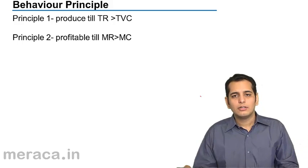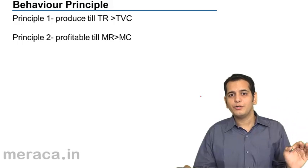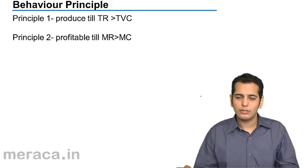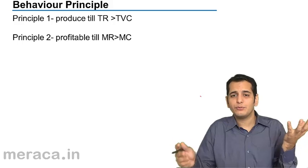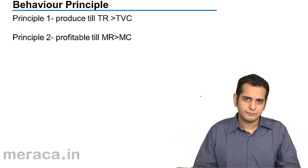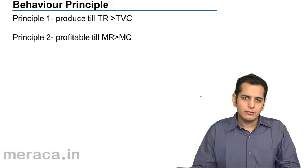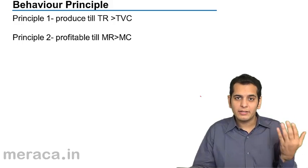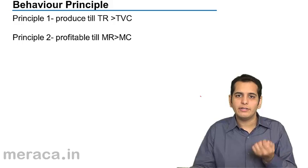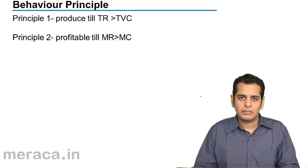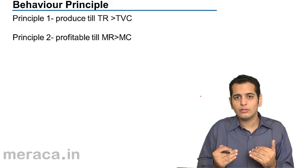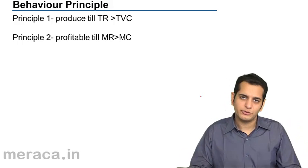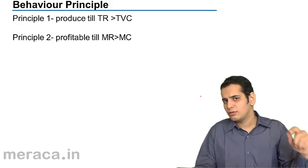The first behavioral principle says that the producer should produce till the time the total revenue is higher than the total variable cost. It is important for the producer to keep earning more than what he is expending on each product. So, till the time his earnings are more than the expenditure on the product, he should keep on producing the goods. This is the first principle.